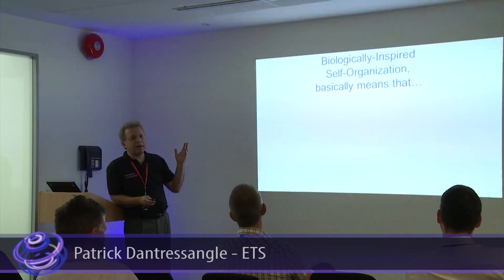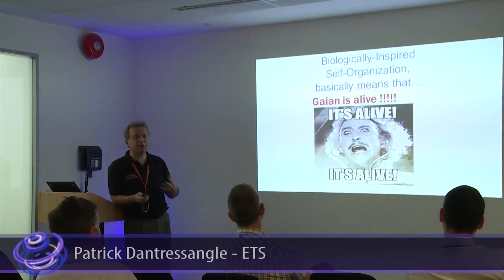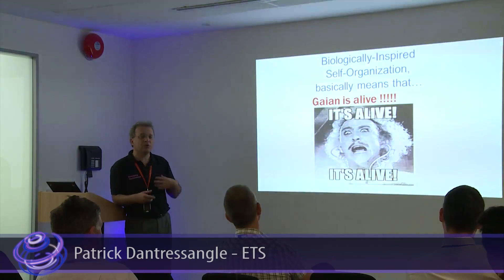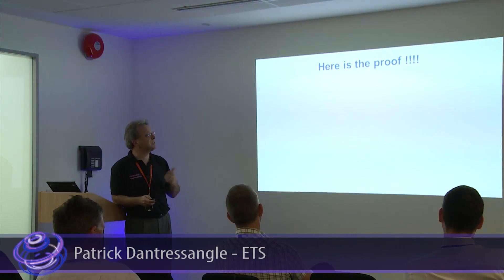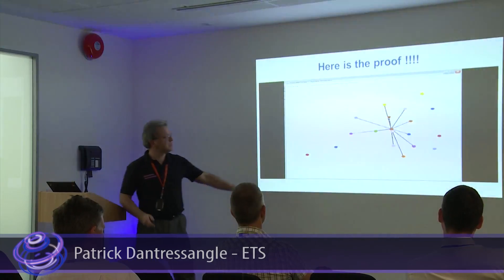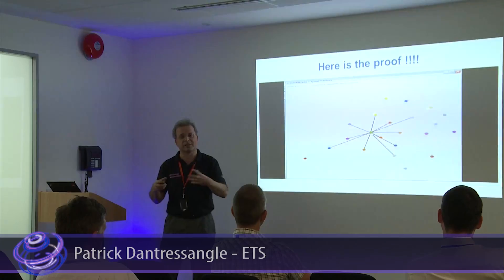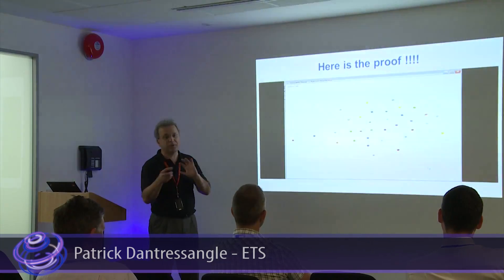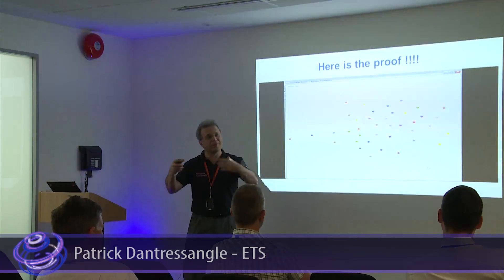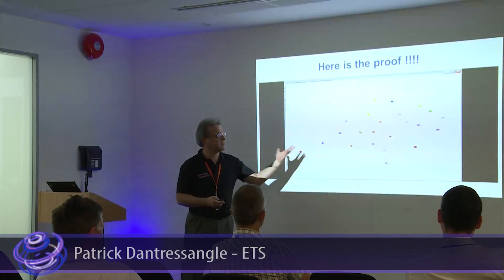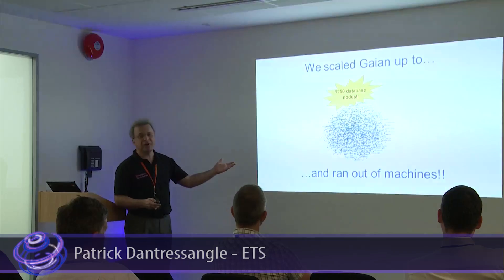We based it on a biologically inspired organisation. What does this mean? It's alive — it deals with the network and everything else on its own. You don't have to tell it to do things; it will do it on its own. This is the Gaian database: all nodes attach automatically together, they discover themselves, attach, and then you can start doing queries. This is the result of a SQL query from one node telling me who the nodes in the network are and where they are coming from. That's a real life demo. We scaled that to 1,250 nodes.